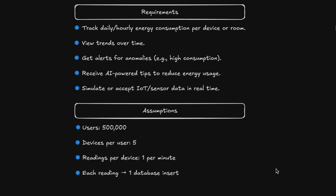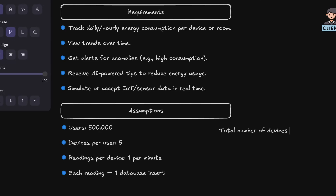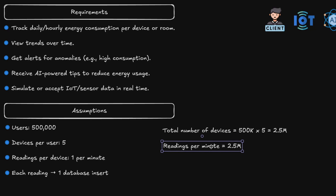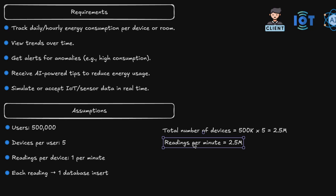Let's calculate the total number of devices: 500,000 × 5 = 2.5 million devices. Readings per minute equals 2.5 million, since each device sends one reading per minute. The readings are incremental — each minute the device sends how much energy was used in that specific minute, giving us the kilowatt hours used in that period, which allows us to calculate total usage. What we really care about is the power consumption — the kilowatt hours used.